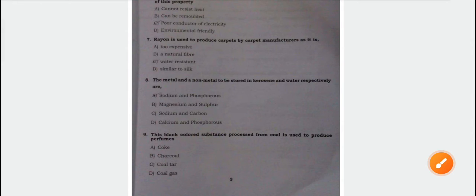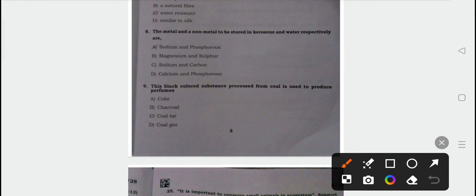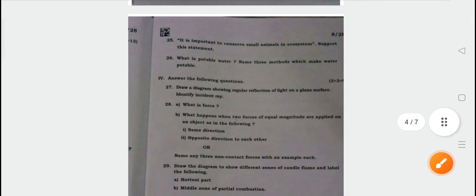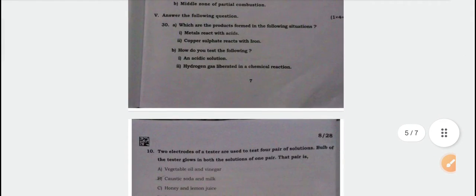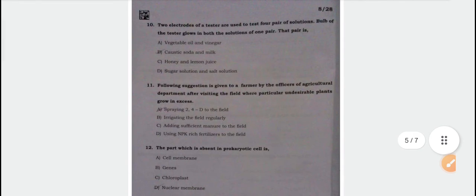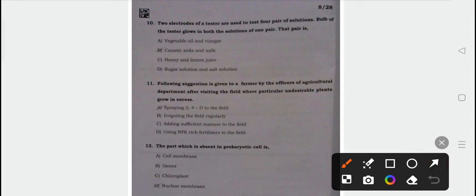This black colored substance processed from coal is used to produce perfumes. Question number nine answer is option C, coal tar is the correct answer. Next, two electrodes of a tester are used to test four pairs of solution. Bulb of the tester glows in both solutions of one pair. The correct answer is option A, vegetable oil and vinegar.